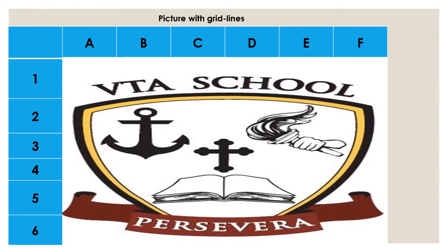This is our picture now with grid lines. We have already labeled our picture with our letters and our numbers. Remember, our letters are on the top part and our numbers are on our left. So we have A, B, C, D, E, and F across the top, and 1, 2, 3, 4, 5, and 6 down the left side. Now we can locate the grid position of the letter H in the word school.